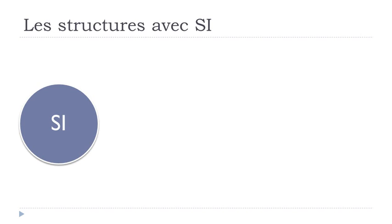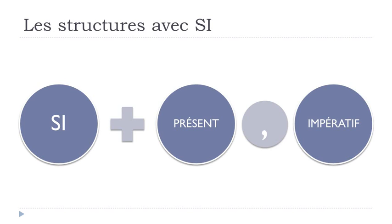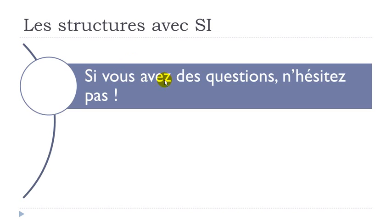We have a second possibility to express this idea: SI plus LE PRÉSENT, followed by L'IMPÉRATIF. Let's have a look. First example: SI VOUS AVEZ DES QUESTIONS — AVOIR is 'to have,' so 'if you have some questions' — N'HÉSITEZ PAS: 'don't hesitate.' This structure is quite common. You can see: SI, then the present form, followed by L'IMPÉRATIF.